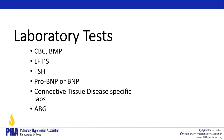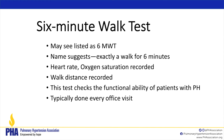For laboratory testing, we do a CBC — checking white blood cell count, hemoglobin, and platelets — and a BMP for common chemistries and electrolytes. We check liver function tests because some pulmonary hypertension medications can cause elevated LFTs as a side effect. We also look at either pro-BNP or BNP, connective tissue disease-specific labs, and an ABG — arterial blood gas — which is the painful stick most patients don't enjoy.